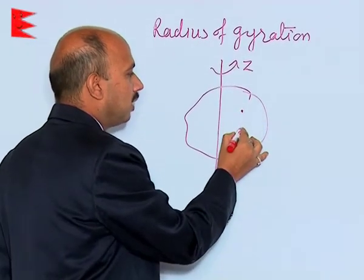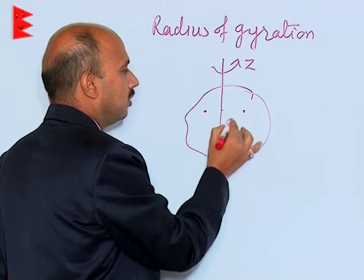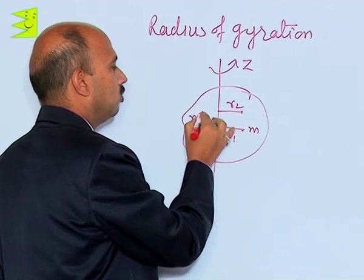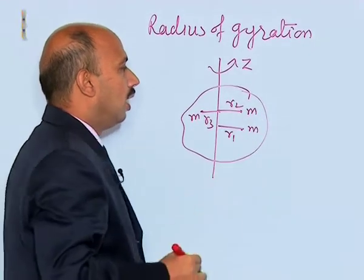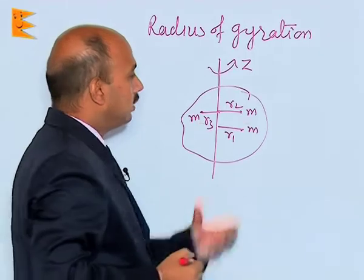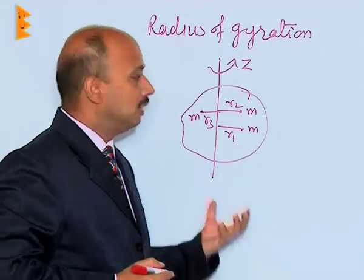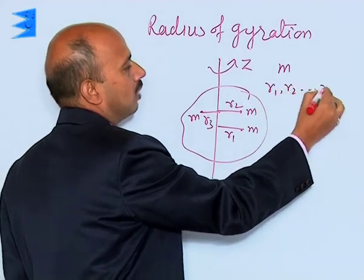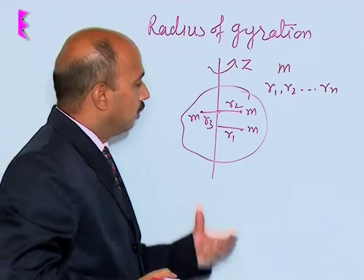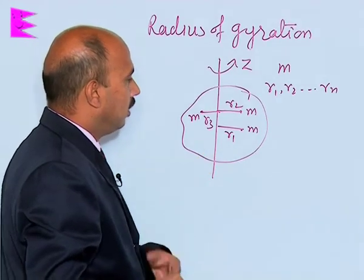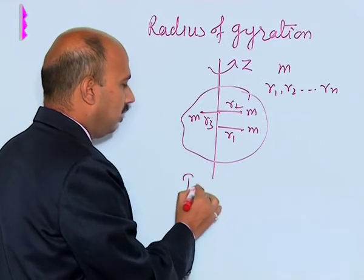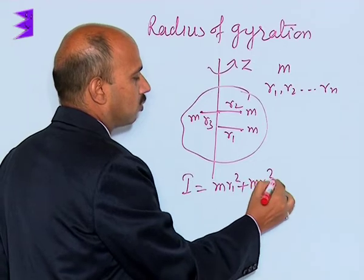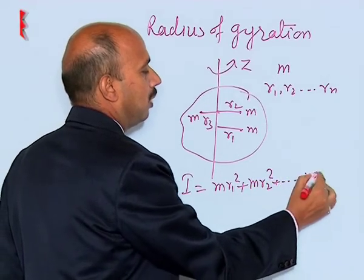This body is made of a large number of particles — like this is m having distances r1, r2, and r3. So, the body is made of n number of particles each of mass m, and these particles are at distances r1, r2, and so on up to rn. The moment of inertia of this body due to the distribution of mass is I = m·r1² + m·r2² + ... + m·rn².